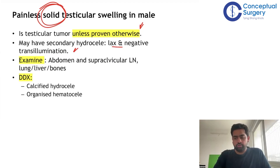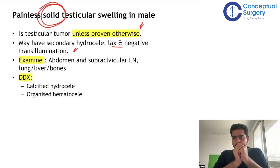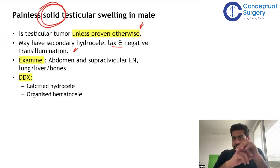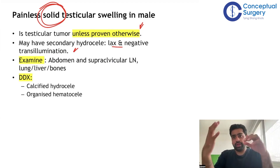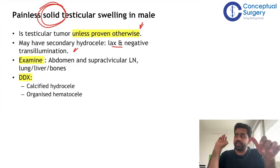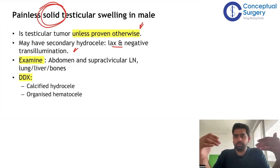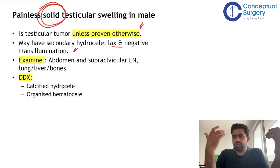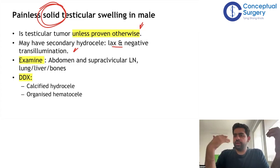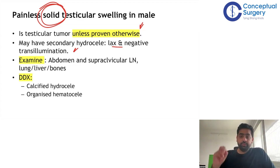Let's clarify primary versus secondary hydrocele. If there is any testicular pathology — epididymo-orchitis, testicular malignancies — reactive fluid can be secreted around the testis; this is a secondary hydrocele. These tend to be lax and transillumination may be present. In some peripheral settings, patients have been operated on thinking it was a hydrocele, only to find a malignancy. These mistakes are absolutely dangerous and should not happen at a good center where proper evaluation is done.